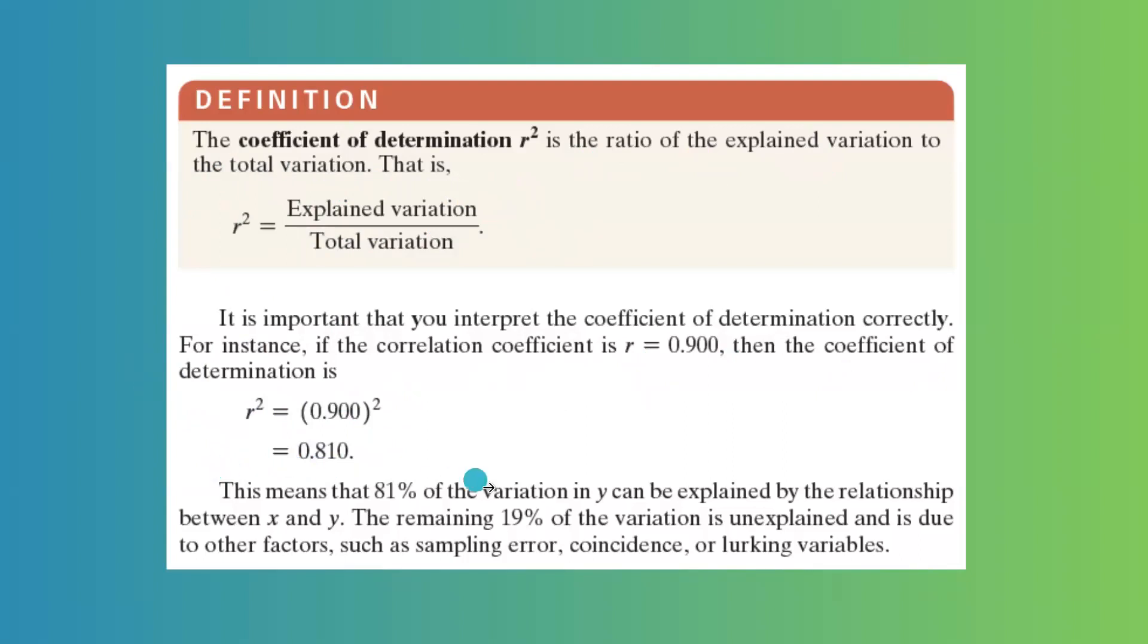This means that 81% of the variation in y can be explained by the relation between x and y. The remaining 19% of the variation is unexplained and it's due to other factors such as sampling error, coincidence, and lurking variables.